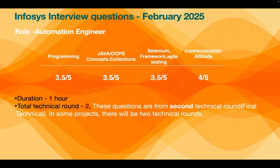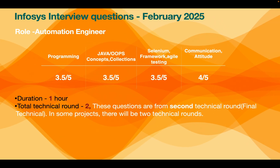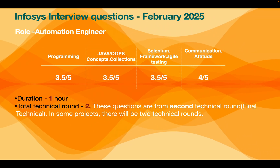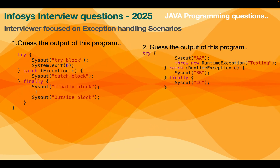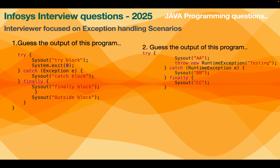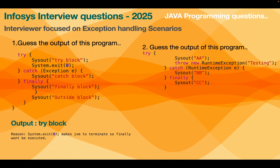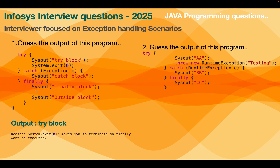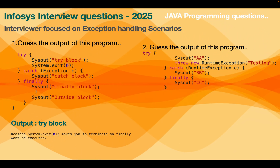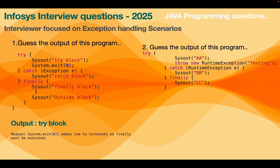This is the second technical round — the candidate has already cleared technical round one. In some projects there will be two technical rounds and finally a HR round. Initially there were some programs given in the chat and we were asked to guess the output. The initial questions were focused on exception handling techniques. In the first program, you see a try block and immediately after the try block there is a System.exit command, which means the program will be terminated there.